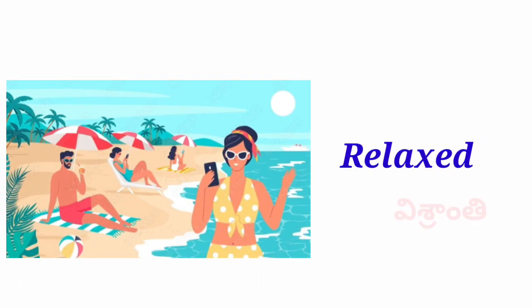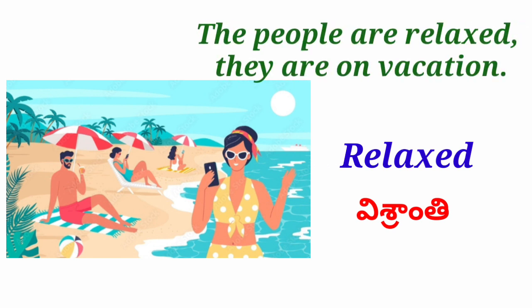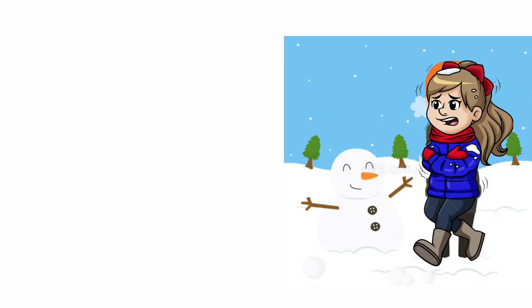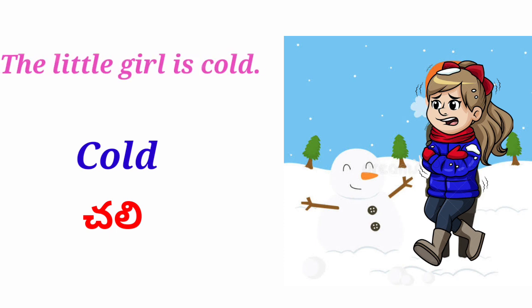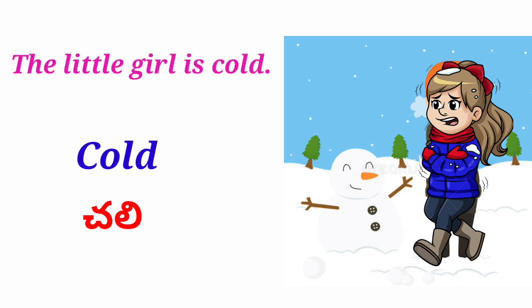Relaxed — The people are relaxed, they are on vacation. Cold — Chali. The little girl is cold.